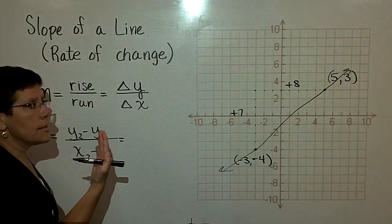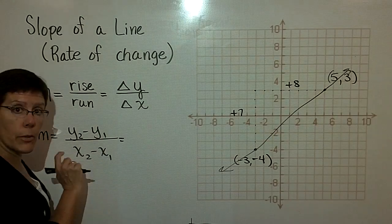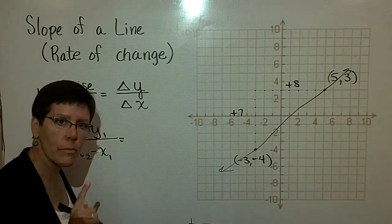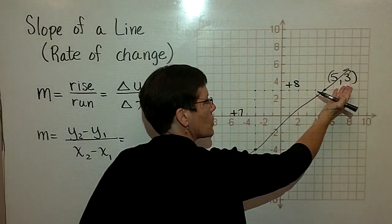These subscripts mean take the Y value in the second ordered pair and subtract the Y value in the first ordered pair. Which one's the second and which one's the first? It doesn't matter. You decide.